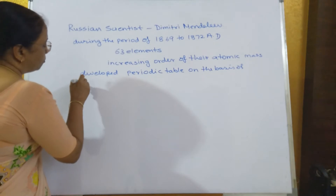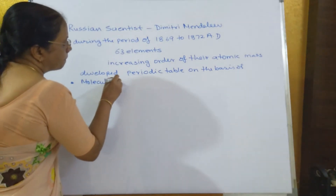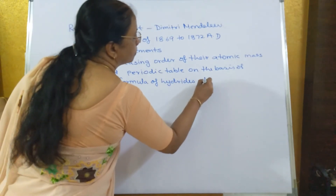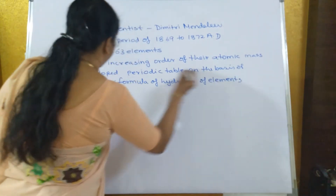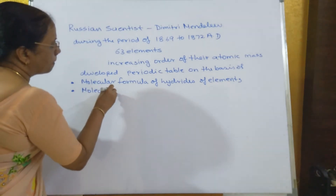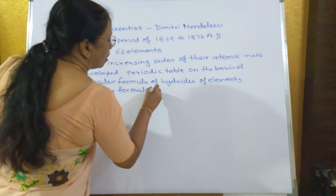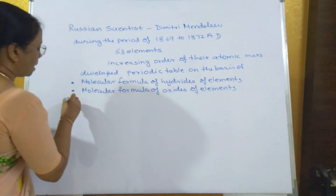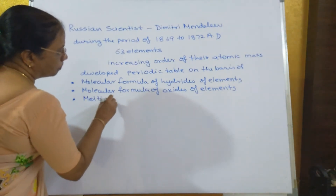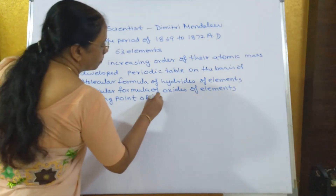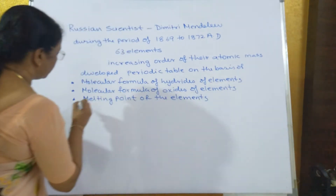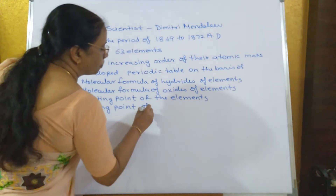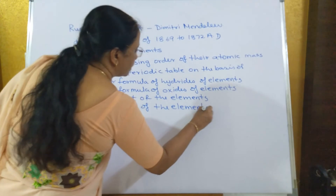He considered the molecular formula of hydrides of elements, the molecular formula of oxides of elements, melting points of the elements, boiling points of the elements, and density of the elements.